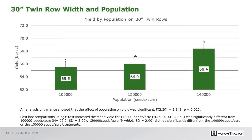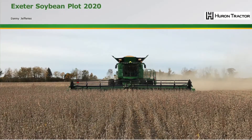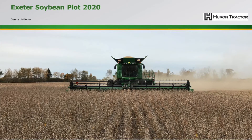Looking at the 30-inch twin rows: the left column was 100,000 seeds per acre, center 120,000, and right 140,000 seeds per acre. In this case we did see a significant benefit of 140,000 seeds per acre over the 100,000 seeds per acre. However, the 120,000 seeds per acre plant population did not differ from either.